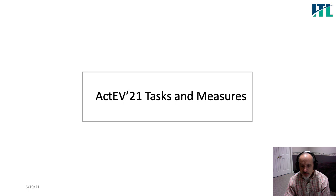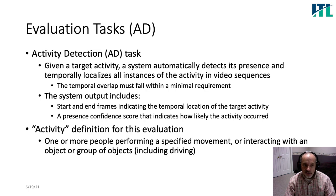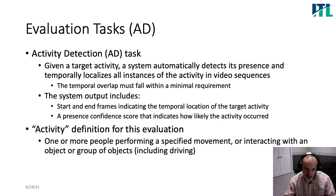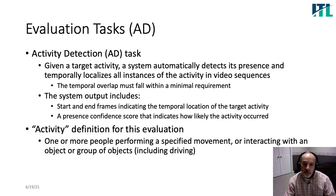Now onto the evaluation tasks and measures. We define the activity detection task as: given a target activity, the system automatically detects the presence and temporally localizes all instances of that activity in the video sequences. The temporal overlap must meet a minimum requirement to be counted as correct. The system also produces the start-time and end-time frames — that's the temporal localization aspect — and then a confidence score indicating how likely it is that the instance is present. We define an activity to be one or more people performing a specific movement, or interacting with a group of objects and other people, including driving.